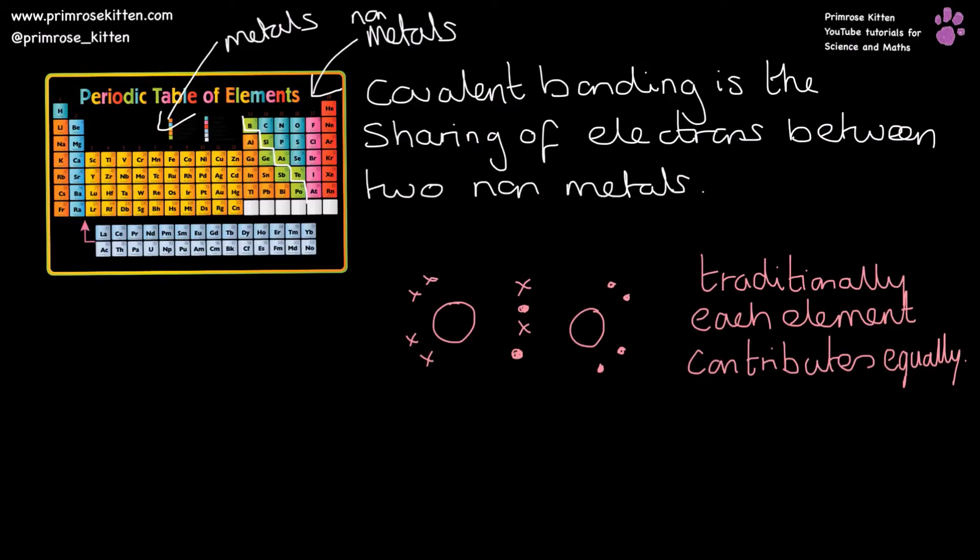Covalent bonding is the sharing of electrons between non-metals. And traditionally, each element is going to contribute equally. So here we have the bonding in oxygen. Each oxygen has contributed two electrons to the double bond down the middle. Now, that is not the case in dative or coordinate covalent bonding.